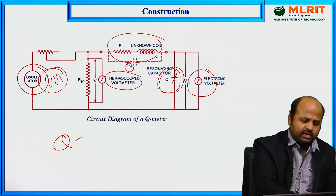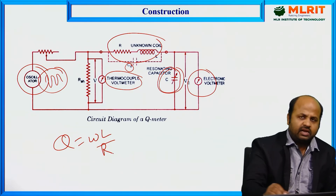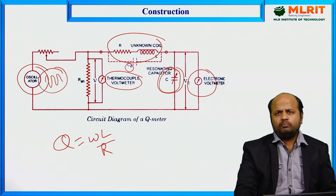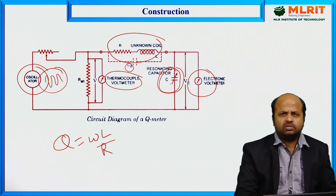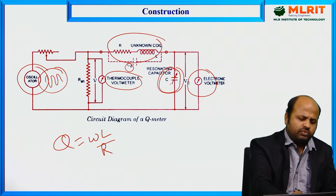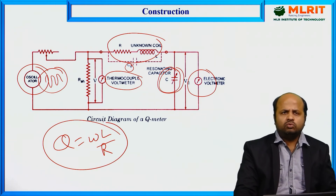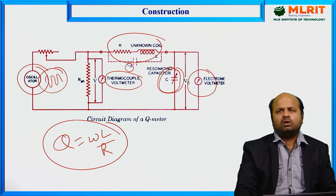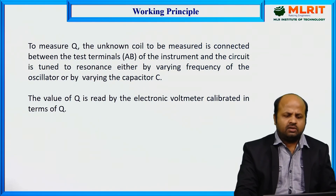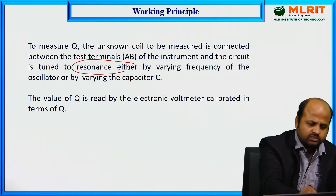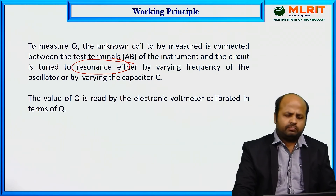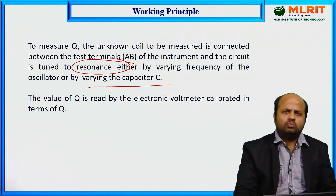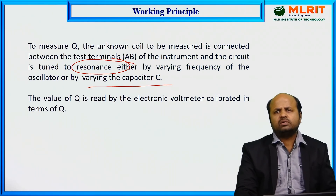The quality factor is given as Q = ωL/R at the resonance condition. The important step is to tune the capacitor and bring the circuit into resonance. Once the circuit is in resonance, we apply the formula Q = ωL/R to calculate the quality factor of the coil. So the working principle is based on resonance: provide a signal of a certain frequency from the oscillator, vary the capacitor to tune that frequency, and once tuned, calculate the quality factor.